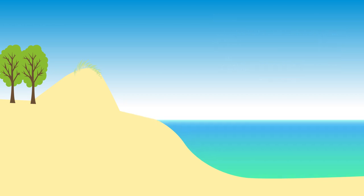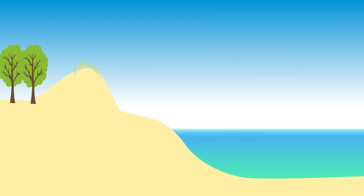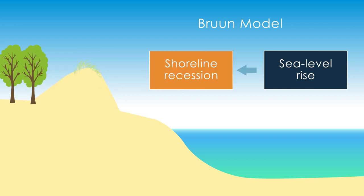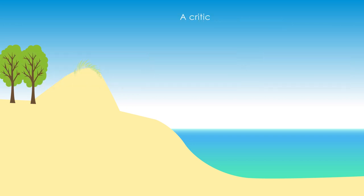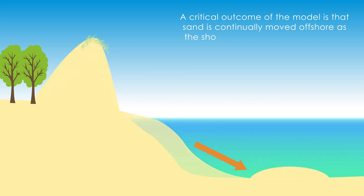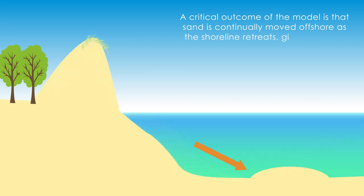Since the 1960s, coastal managers and engineers have relied on the Bruun model, which predicts the relationship between sea level rise and shoreline recession. A critical outcome of the model is that sand is continually moved offshore as the shoreline retreats, giving rise to a loss of sand from the beach.